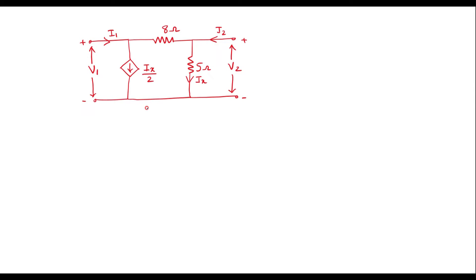In this circuit, we can observe that this is current I1 and this is current I2. There is a dependent current source which is dependent on current Ix. Ix is the current which flows through the 5 ohm resistor. I1 is flowing in this loop, I2 is flowing in this loop, and here we have one more loop. I will assume that the current through this loop is X, with direction as shown.